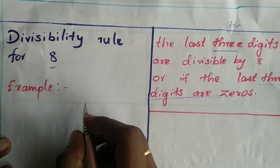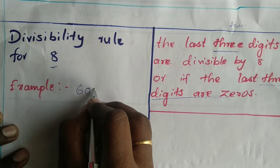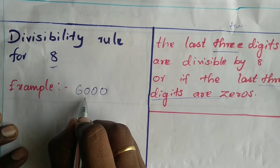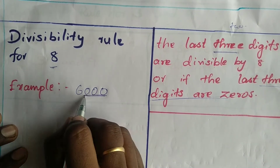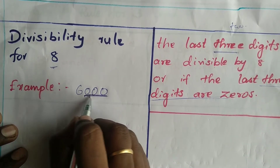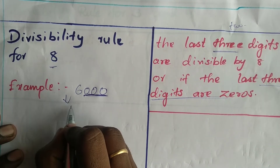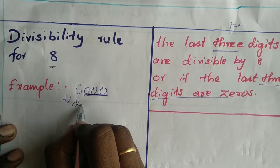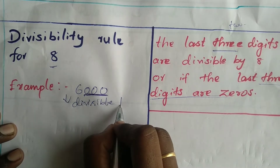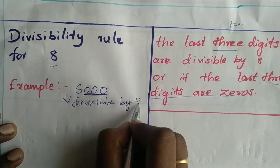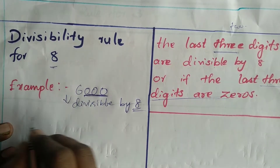For example: 6,000. The last 3 digits are all zeros, so we can say 6,000 is exactly divisible by 8.